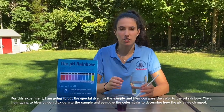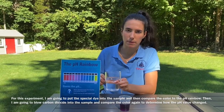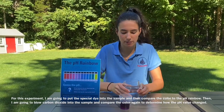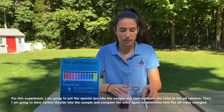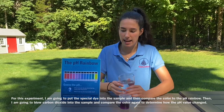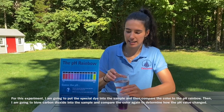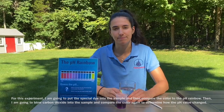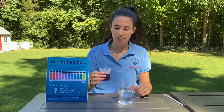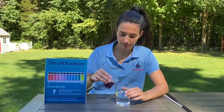It will turn a certain color and we'll compare it to the pH rainbow, and then I'm going to blow carbon dioxide into the water with a straw and then we're going to compare the color again to the pH rainbow to see how the acidity changed. So I'm going to put some of our magic juice in the water sample now.